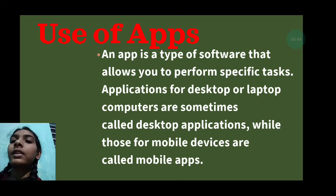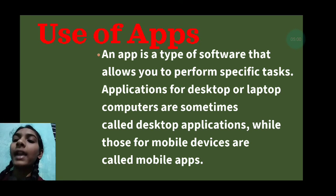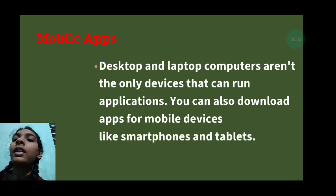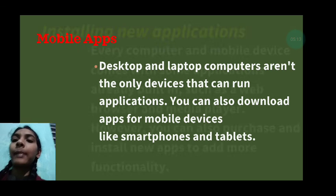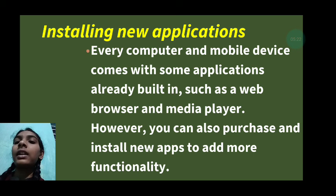Uses of Apps. An app is a type of software that allows you to perform specific tasks. Applications for desktop or laptop computers are sometimes called desktop applications, while those for mobile devices are called mobile apps. Desktop and laptop computers aren't the only devices that can run applications; you can also download apps for mobile devices like smartphones and tablets. Every computer and mobile device comes with some applications already built in, such as a web browser and media player. However, you can also purchase and install new apps to add more functionality.